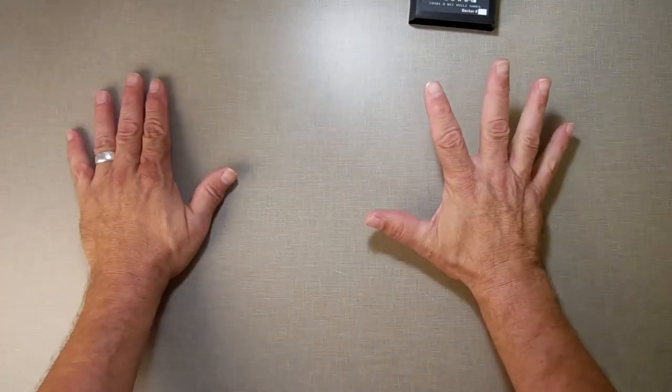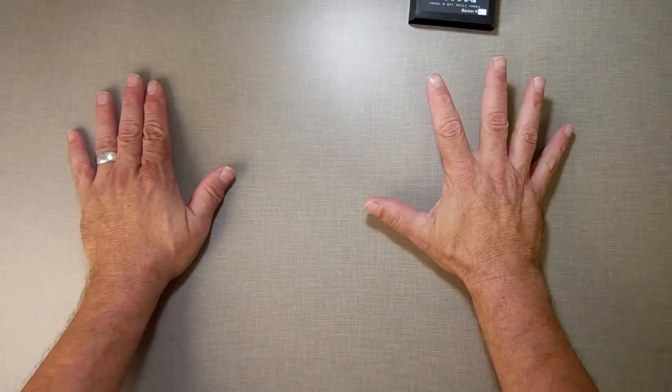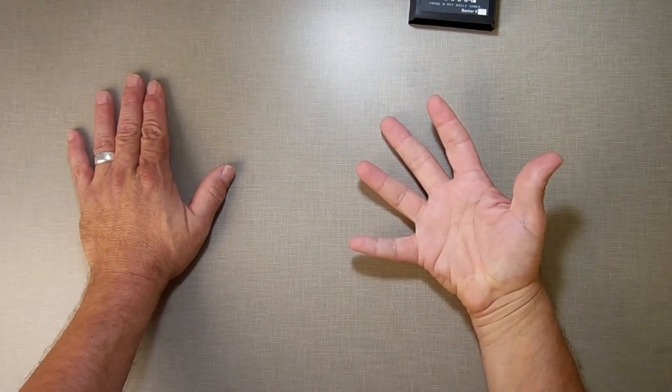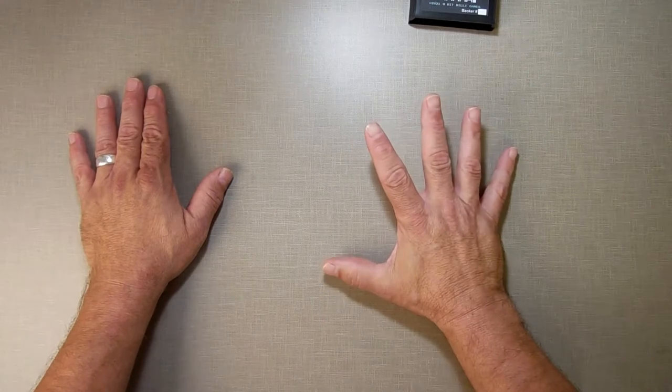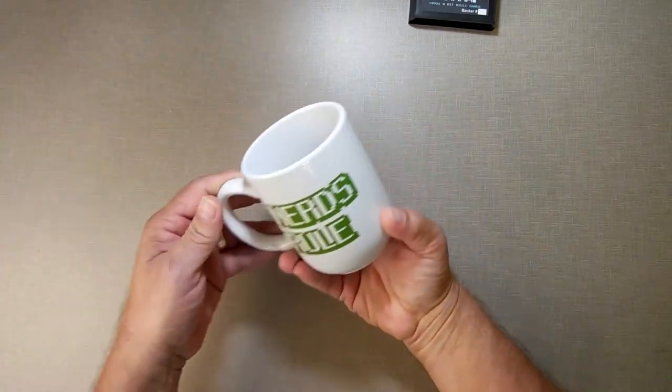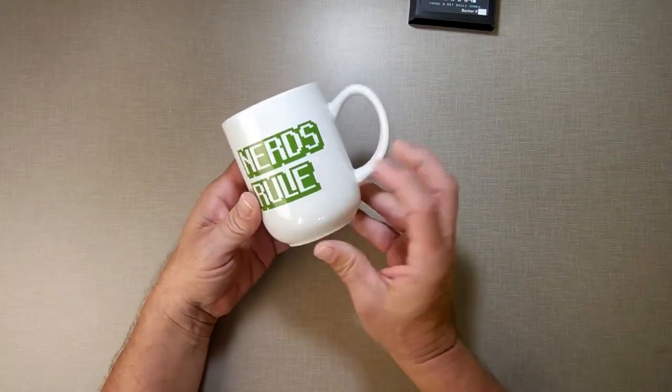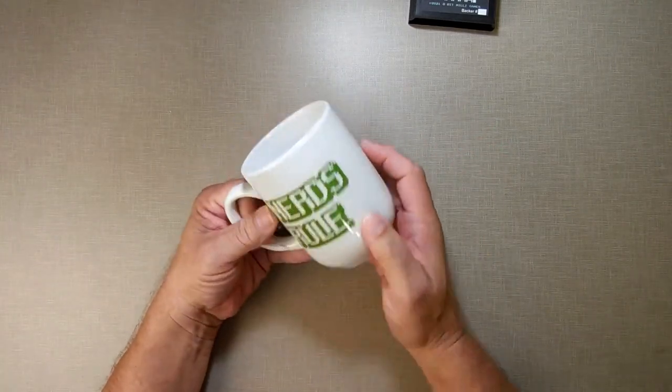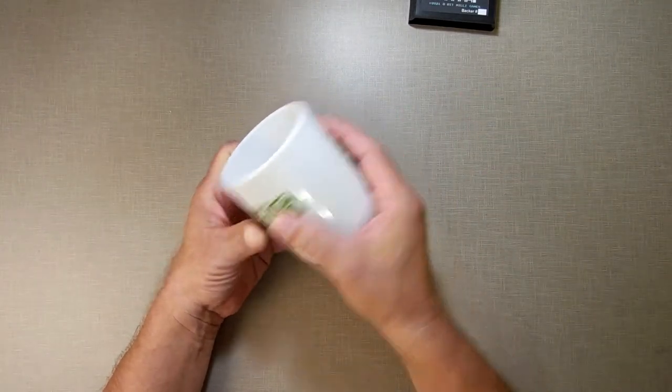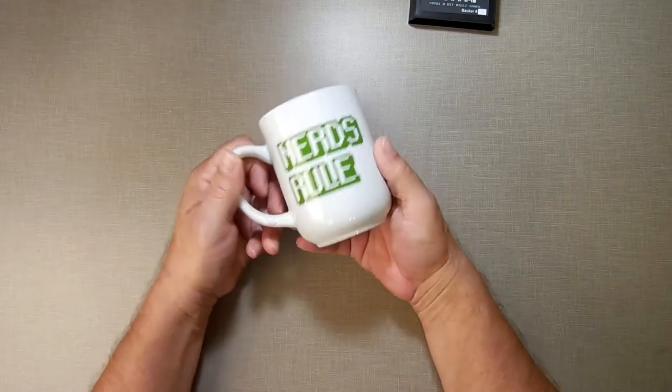Next thing is, as part of our stretch rewards, you're going to have the option of choosing a ColecoAtom data pack with the game on it, or a coffee mug. This is an example of the coffee mug. This is my coffee mug I use every day. This is the coffee mug that's going to go out. It's not going to say Nerds Rule on it though. The coffee mug is going to have Crazy Climber Redux on it, custom printing. But I just want to show you how big the mug will be.